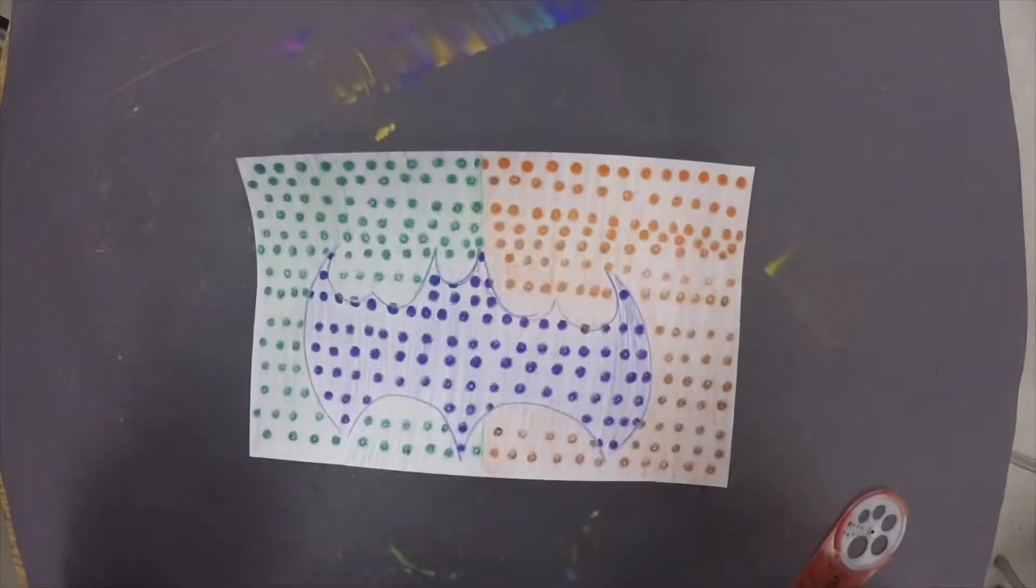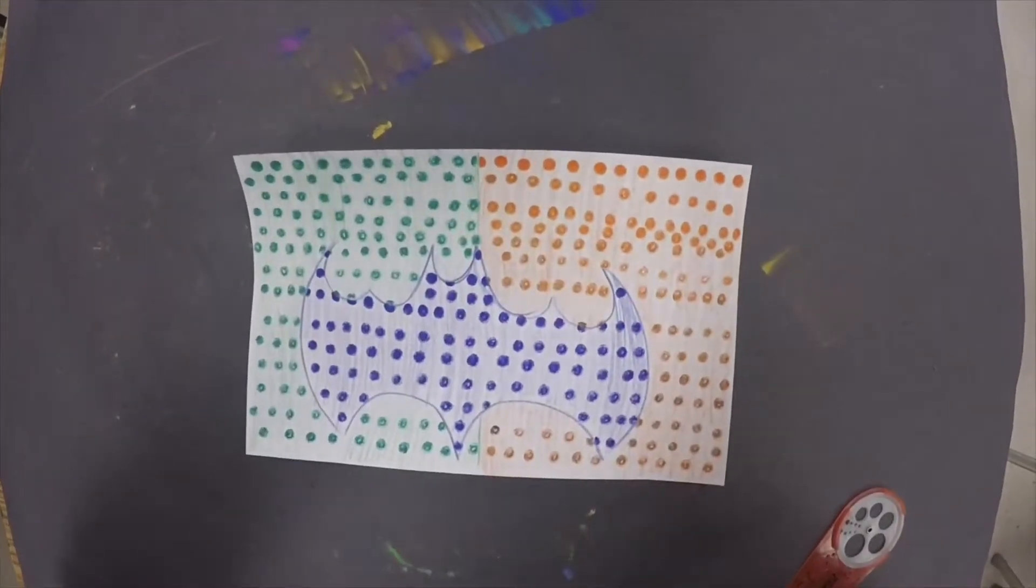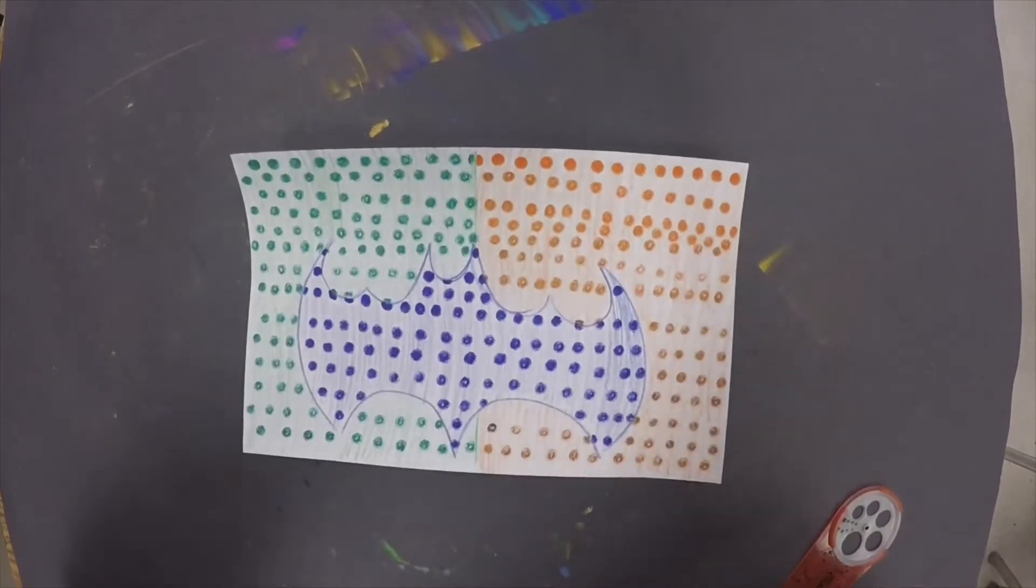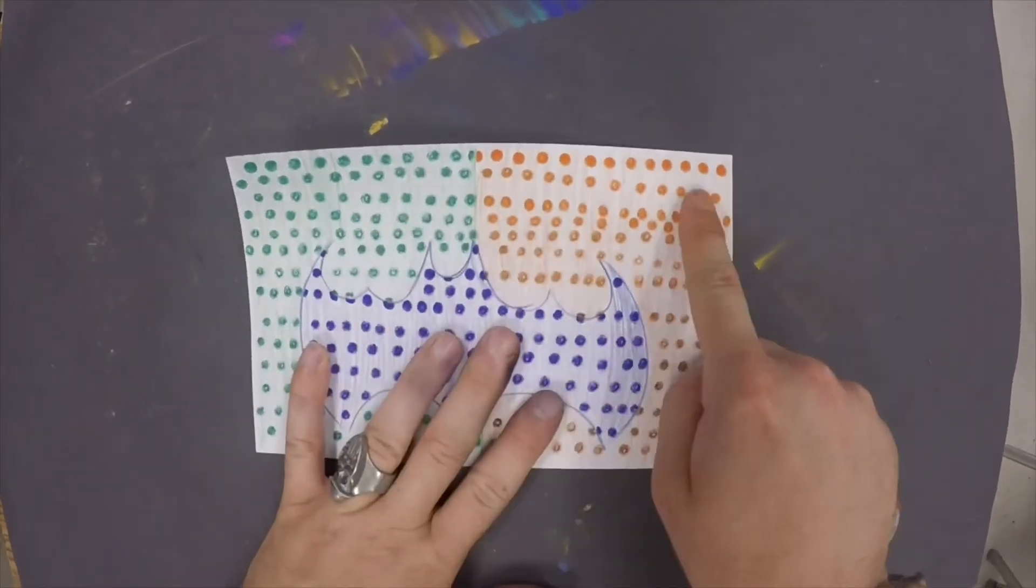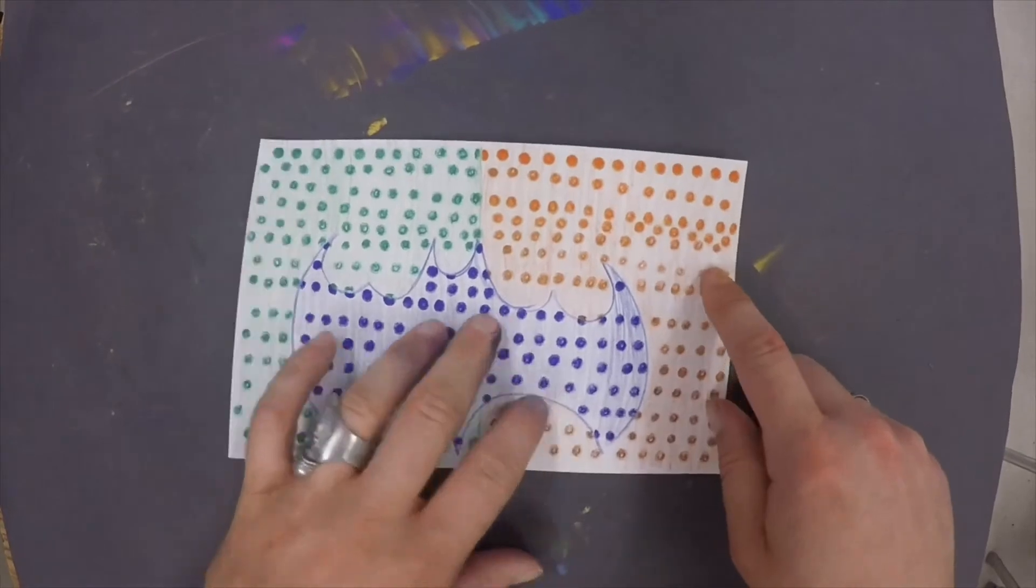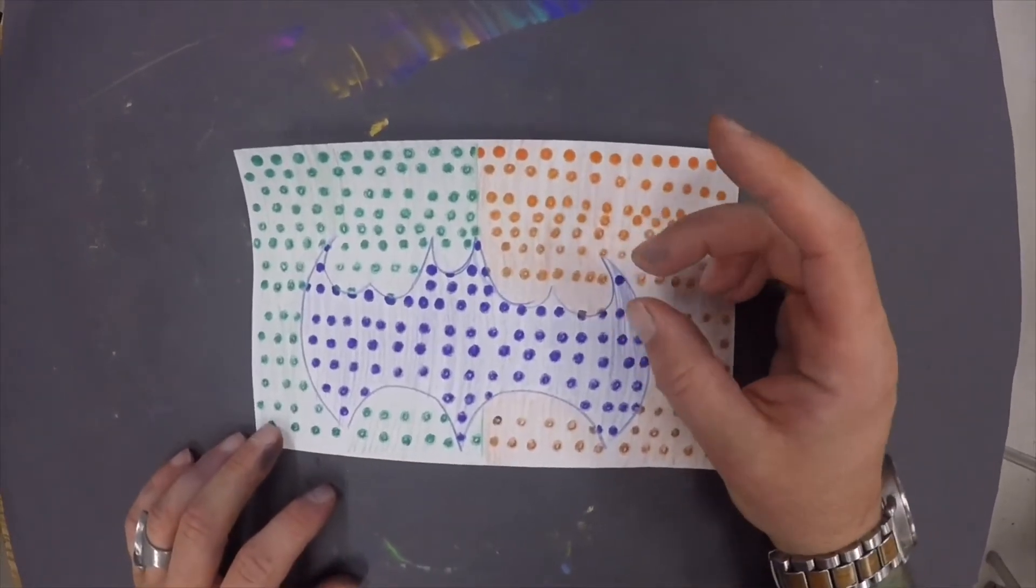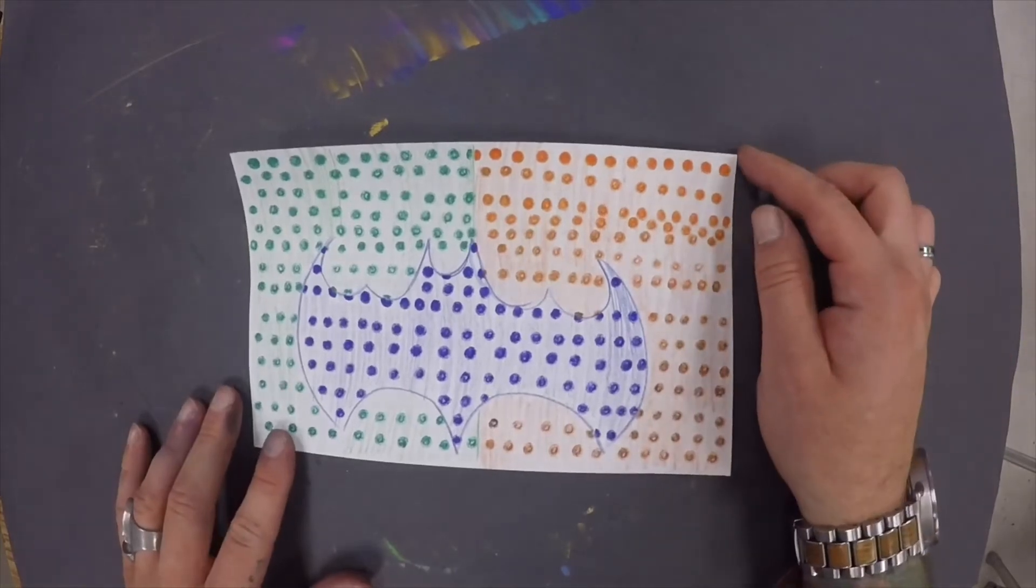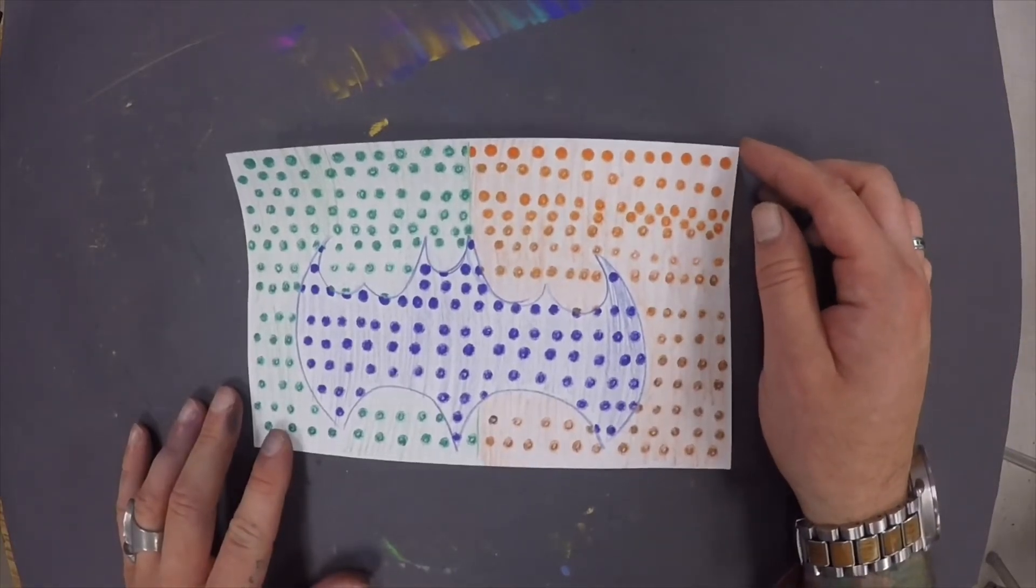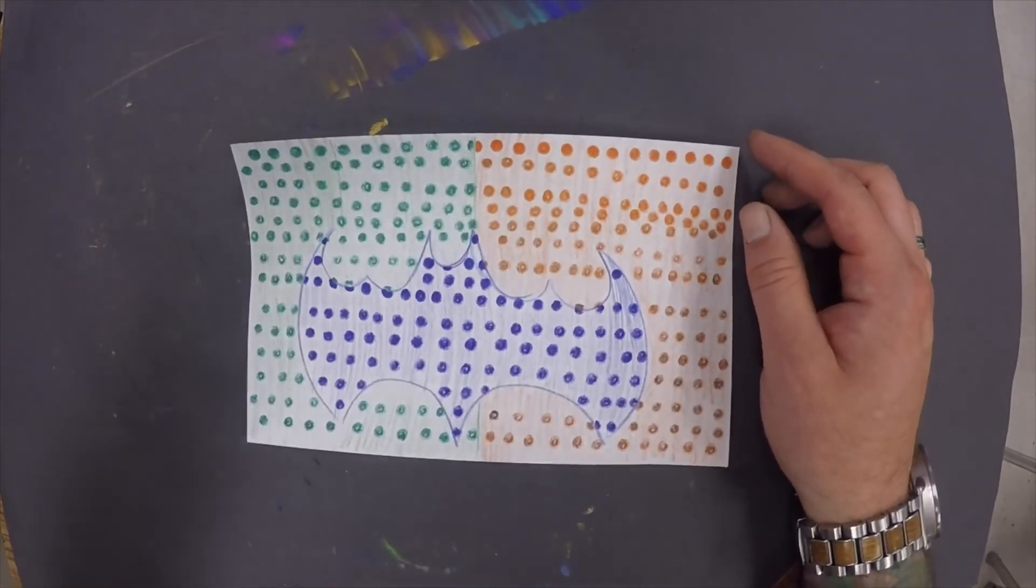And here we have the piece with the benday finish. Now again, reminders, we are imitating machines when we do this. So we need to be precise. We need to keep our lines as straight as possible. We need to keep our benday dots as close, as much to as close to the same size as we can. Good luck and happy arty.